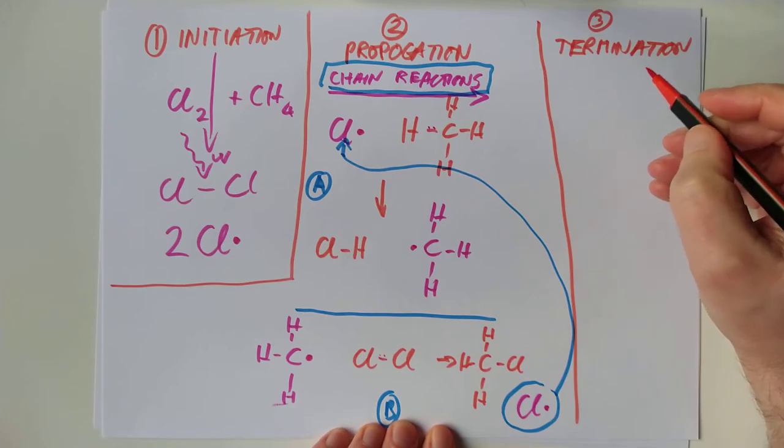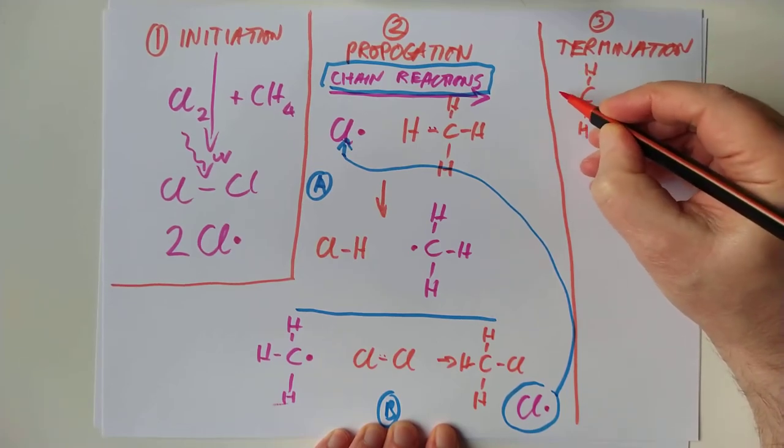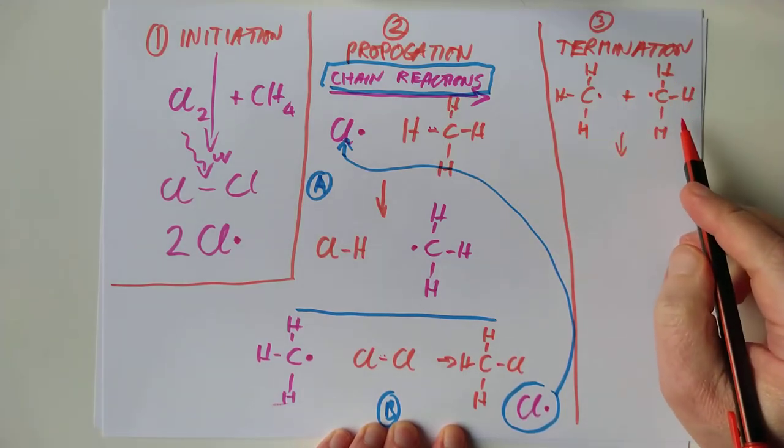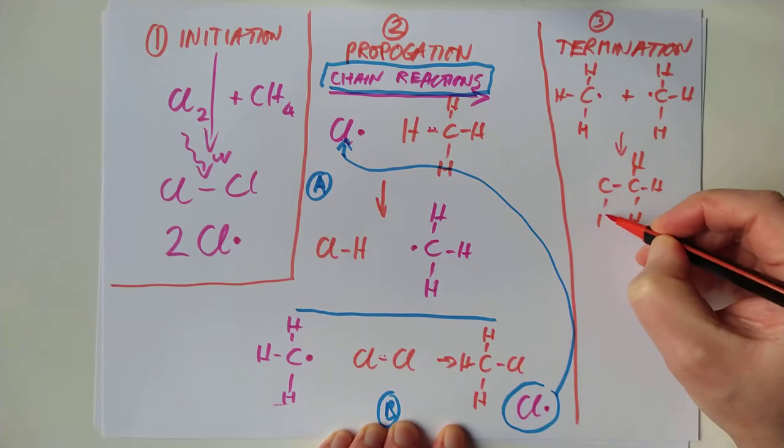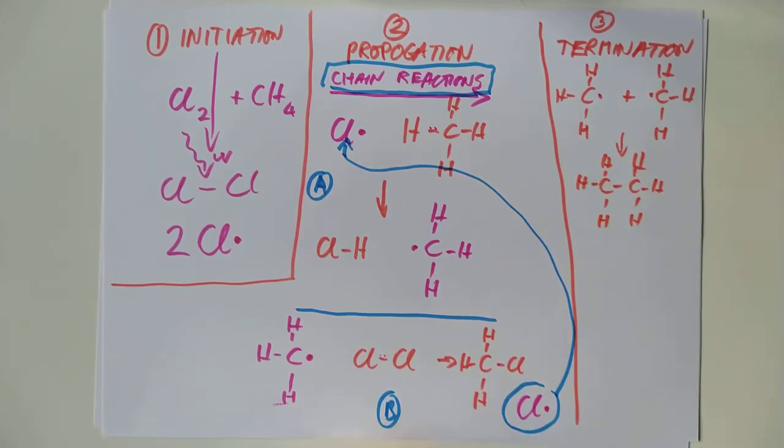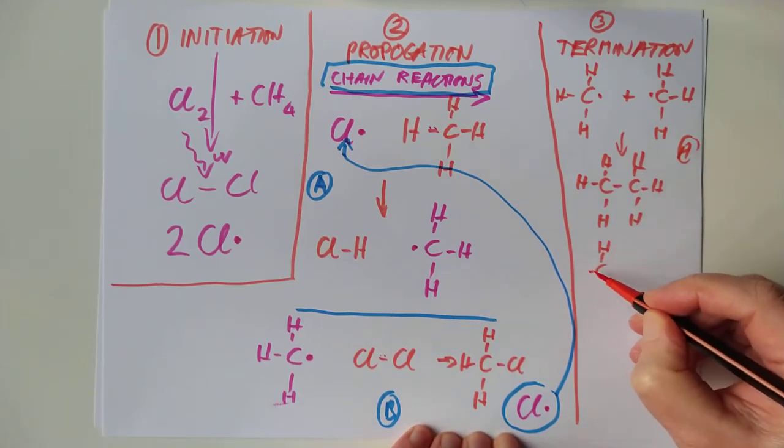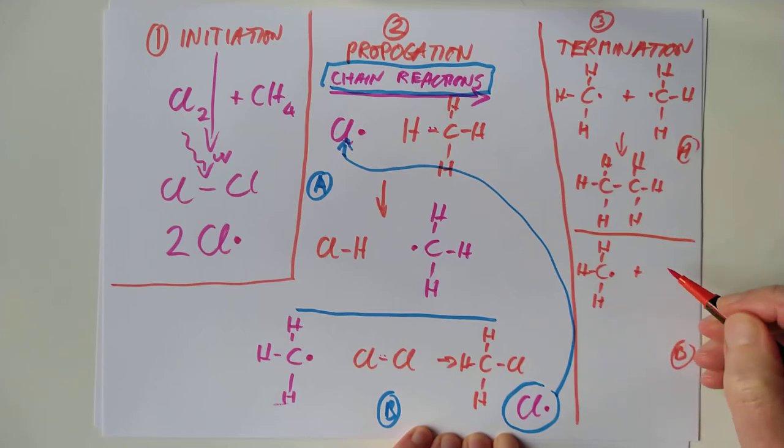Is there any way to stop this? Apart from just waiting until all your chemicals are used up, which takes a couple of microseconds. There are termination steps. You can take, if you're lucky, a methyl radical that will bump into another methyl radical. And they will make ethane. The other termination possibility is you could have a methyl radical bump into a chlorine radical. And you would just make chloromethane.